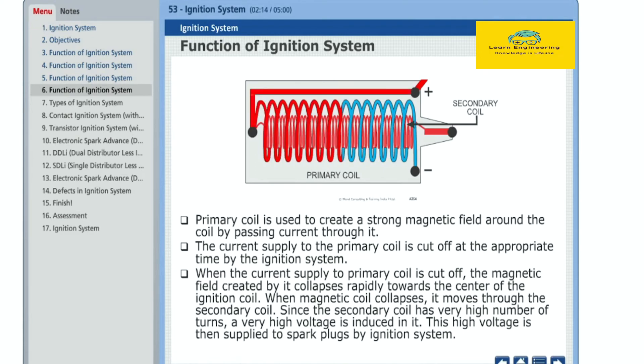When magnetic coil collapses, it moves through the secondary coil. Since the secondary coil has very high number of turns, a very high voltage is induced in it. This high voltage is then supplied to spark plugs by ignition system.